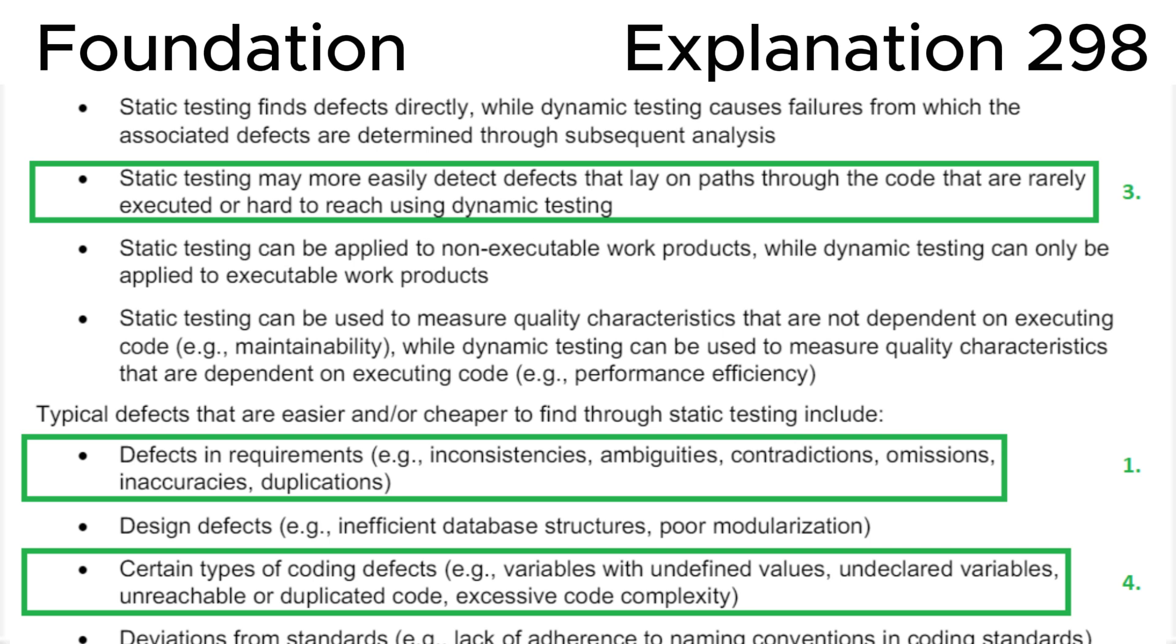Defects in requirements, e.g., inconsistencies, ambiguities, contradictions, omissions, inaccuracies, duplications. Certain types of coding defects, e.g., variables with undefined values, undeclared variables, unreachable or duplicated code, excessive code complexity.